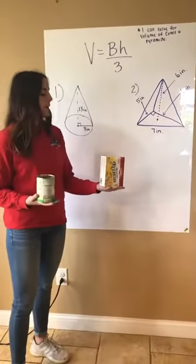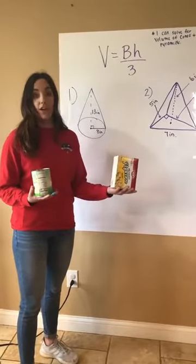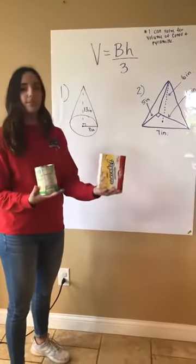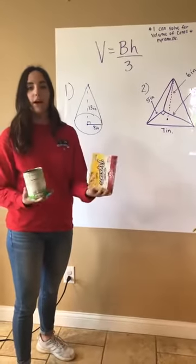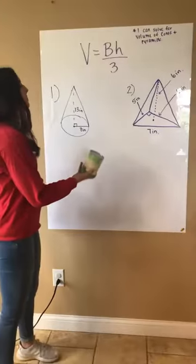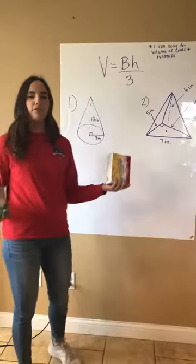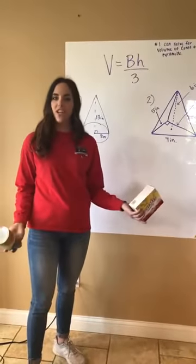I'm hoping what you notice about these figures are that prisms and cylinders they look the same no matter which way you turn it. They have two bases. Cones and pyramids come to a point on one end. So how does that affect their volume?